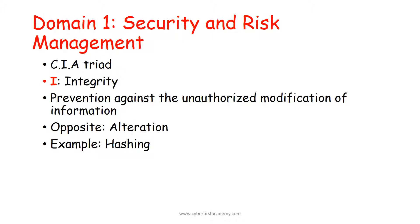The I in the CIA triad stands for integrity. Integrity is the prevention against the unauthorized modification of information. Any changes made to a file or data need to be tracked and prevented from unauthorized people taking action. An example of integrity is hashing.